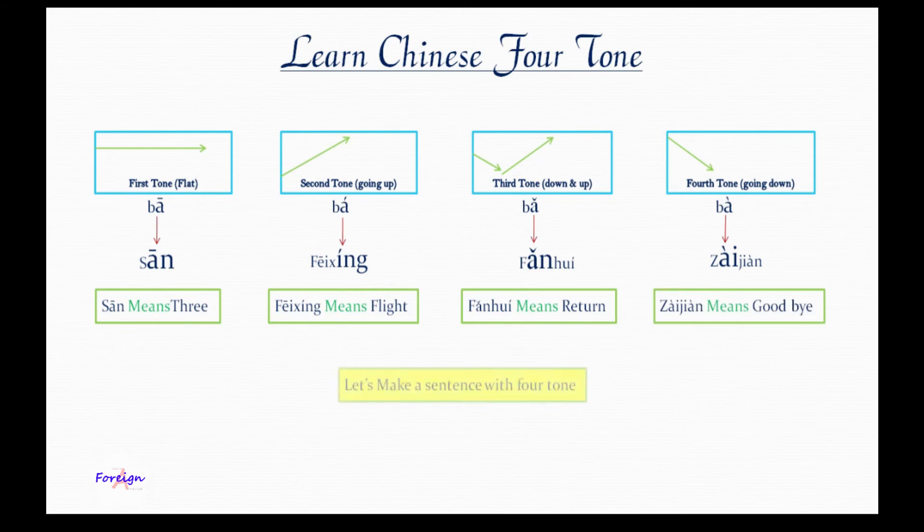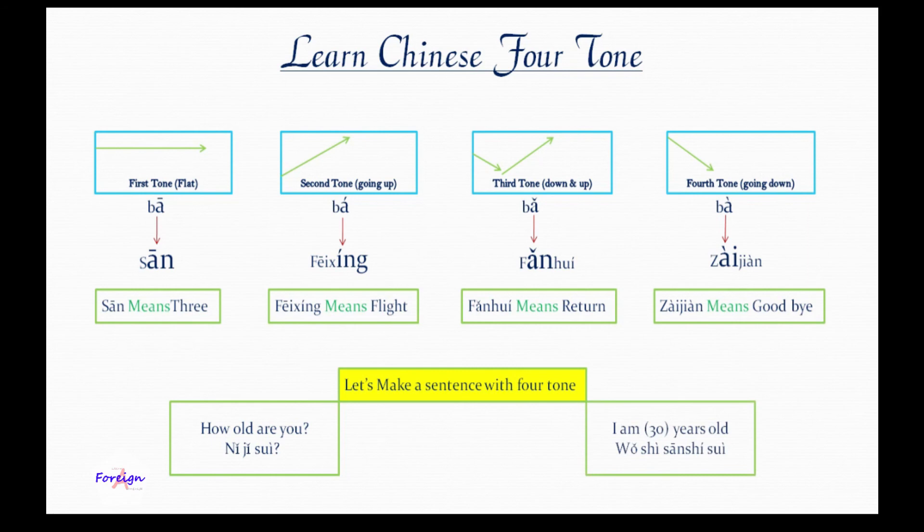Let's make a sentence with the four tones. For an example: How old are you? It's called 'Ni ji sui? Ni ji sui?' I'm 30 years old: 'Wo sanshi sui. Wo sanshi sui.'